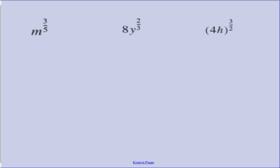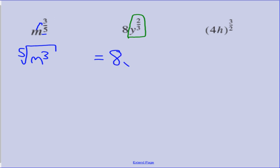A couple more examples converting the other way. M to the power of 3 fifths: the bottom number tells us the power of the root sign, so we're looking for the fifth root. M remains M, and the numerator 3 becomes the power of M under the root sign, giving the fifth root of M cubed. Next: 8y to the power of 2 thirds — be careful, there are no brackets, so only Y has the power of 2 thirds. The 8 stays out front. The denominator 3 gives us the cube root of Y, and the numerator 2 makes it Y squared: 8 times the cube root of Y squared.